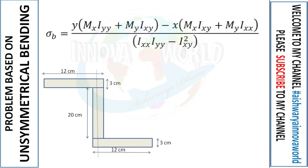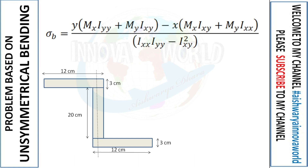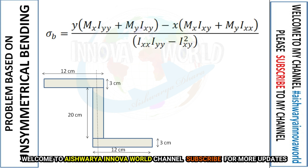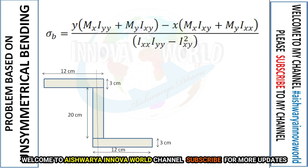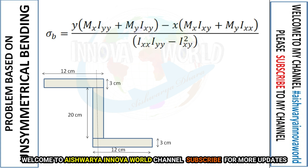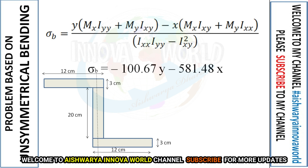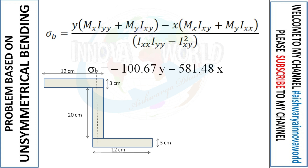Recalling the K-method formula: σb = [y(Mx·Iyy + My·Ixy) − x(Mx·Ixy + My·Ixx)] / (Ixx·Iyy − Ixy²). Substituting all known values, we obtain σb = −100.67·y − 581.48·x.